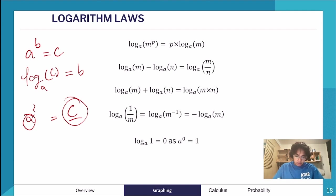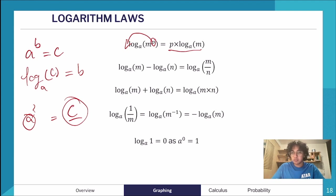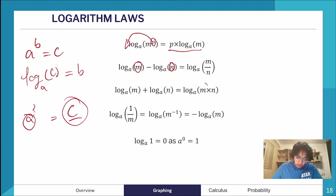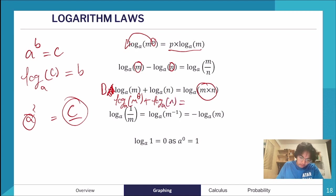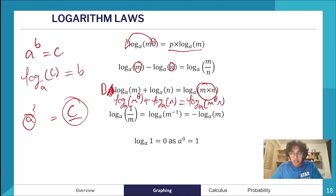The key log laws: first, log_a(m^p) = p·log_a(m) — the power comes out the front. Second, when subtracting two logs of the same base: log_a(m) − log_a(n) = log_a(m/n). Third, when adding: log_a(m) + log_a(n) = log_a(m·n). Note: if there's a coefficient b out the front, it must go inside the bracket as a power first before applying these rules.